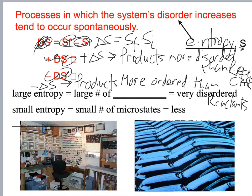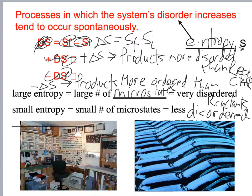Large entropy means a large number of microstates — meaning they're very disordered. If I have a small entropy, I have a small number of microstates and I'm less disordered. So: positive delta S means products are more disordered than reactants; negative delta S means products are more ordered than reactants.